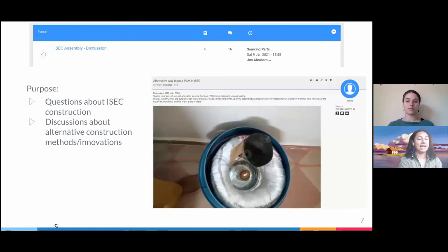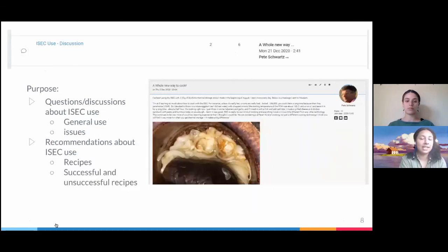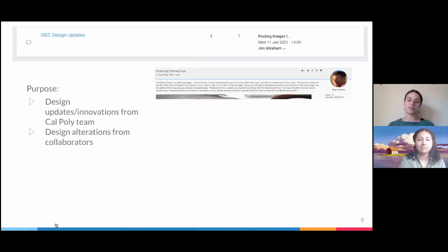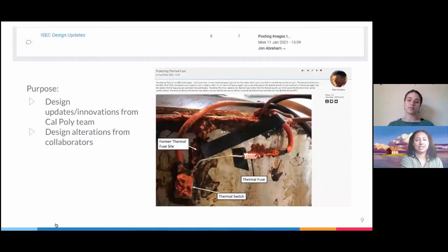So the first section is the ISEC assembly section where people can ask questions about ISEC construction if they're confused about anything, or discuss any alternative construction methods they have come across. The second section is the ISEC use section where people can discuss using their ISEC, they can post recipes and talk about any successes or unsuccesses that they've had. And the last section is design updates where the Cal Poly team and collaborators will post any updates or innovations that they have come across.